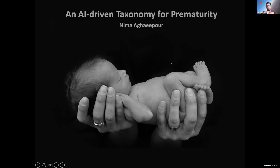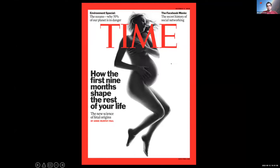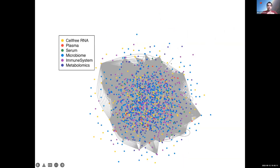Thank you for the invitation. I'm going to talk about preterm birth, the single largest cause of death in children under five years of age in both high- and low-income countries. Beyond preterm birth itself, what happens during pregnancy has long-term consequences for the baby well into adulthood, so it's important to ensure pregnancy happens in an optimum environment.